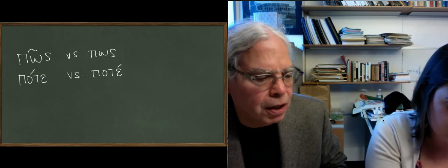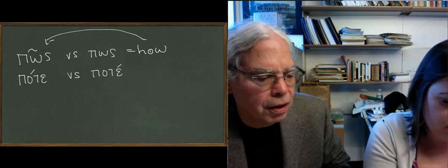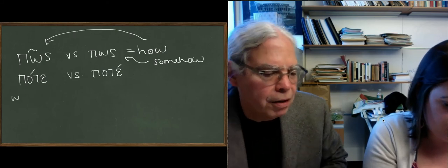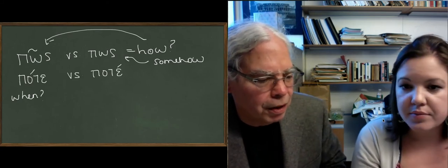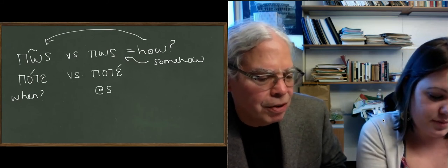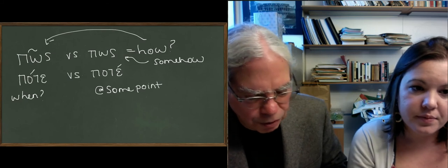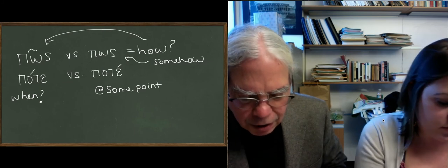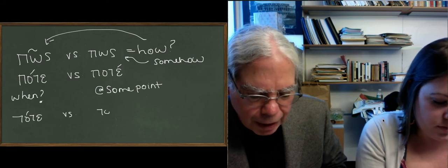When it's at the beginning of the sentence, it has an accent, when it doesn't, when it's enclitic, when it has no accent, it means somehow, and just likewise, pote means when question mark, you can put a question mark after the how, because when it means when question mark, it has an accent, but it means at some point, or some when, there is no some when in English, it means at some time, then it has no accent, it's indefinite, so those are useful words that count a lot in Greek. And then you get the adverb tate, that means then, again, in the same family of these time words, interrogative words.